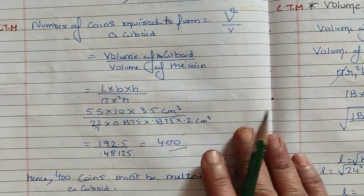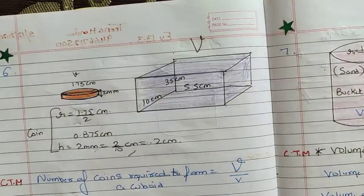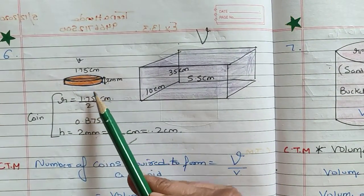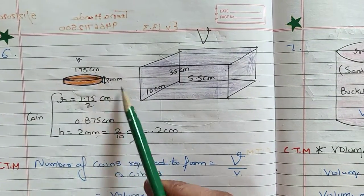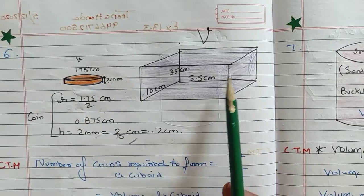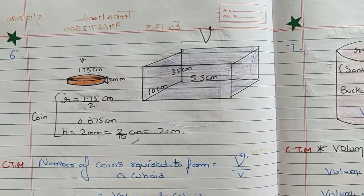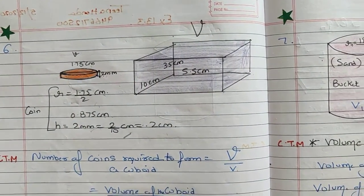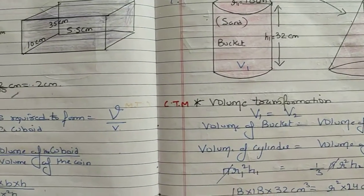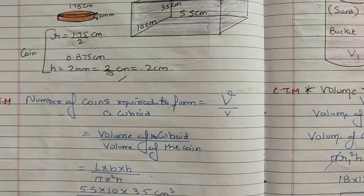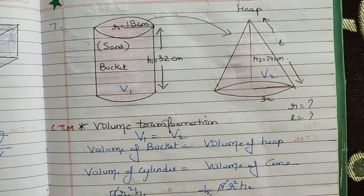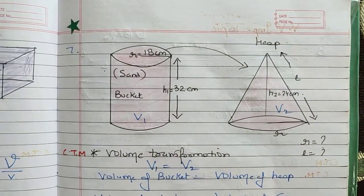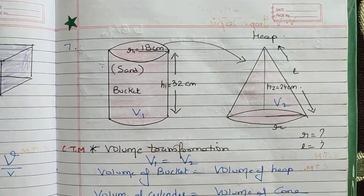It is a very simple question. Everything you need is given: the cylinder radius is given, the height is given, and the units are the same. The length and height of the cuboid are given. Whenever you need to find a number of things, divide the large volume by the small volume. Always remember this.